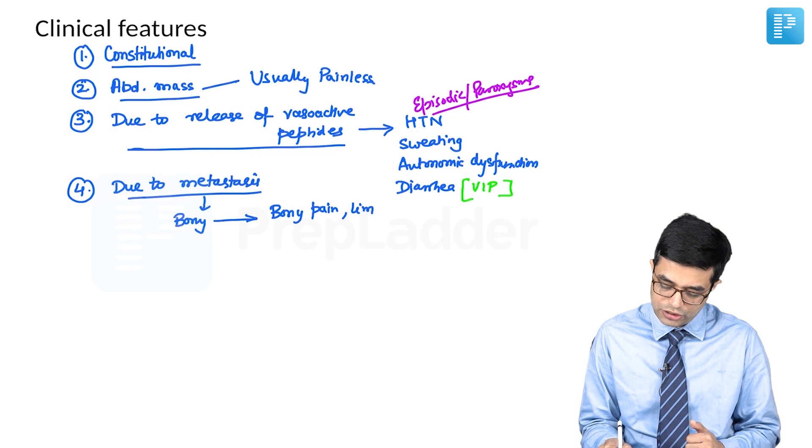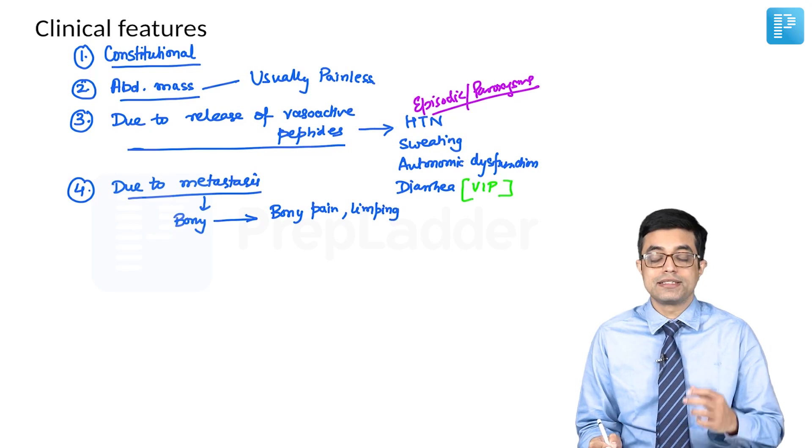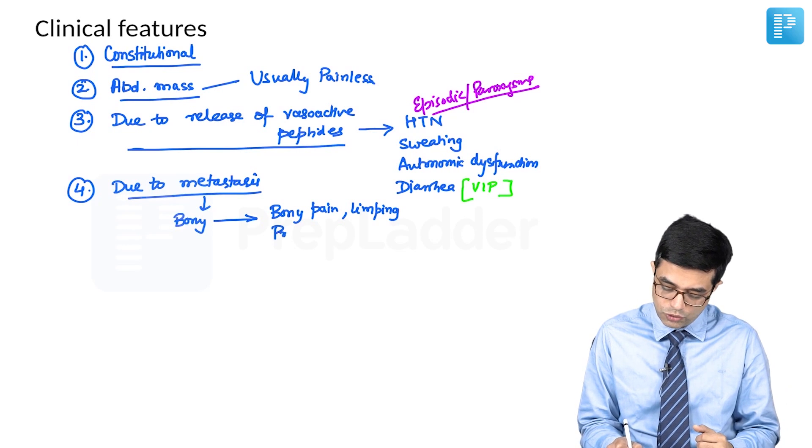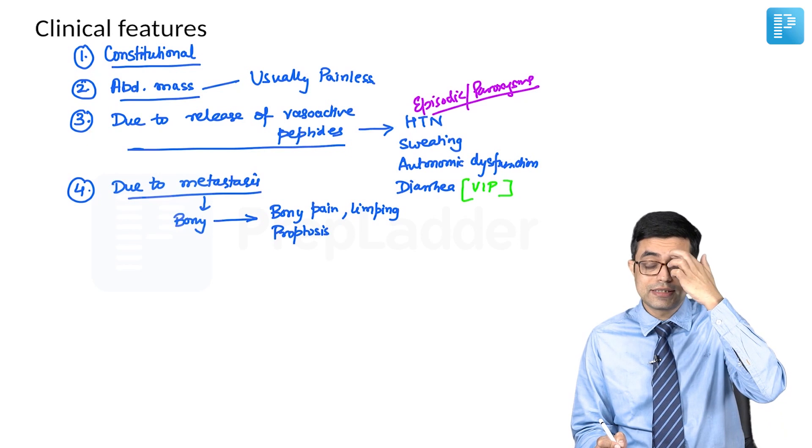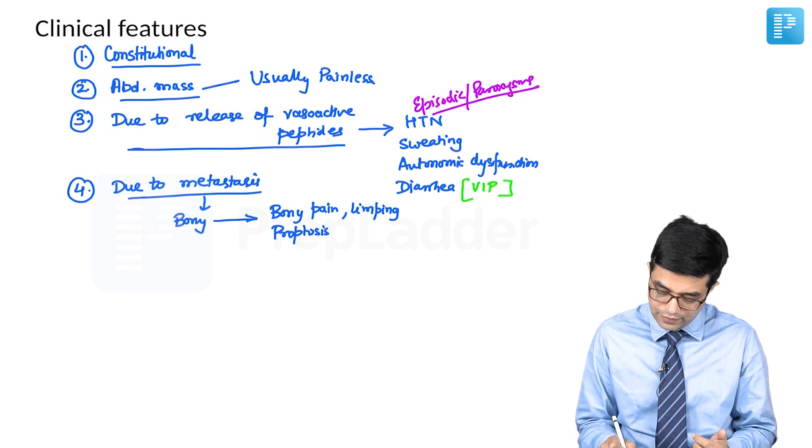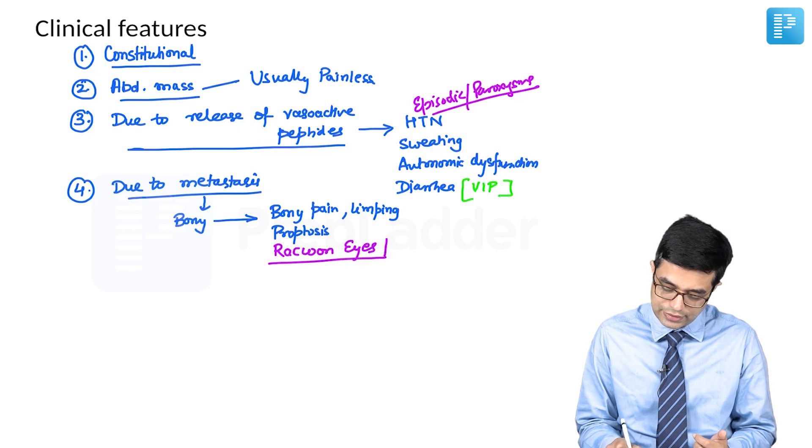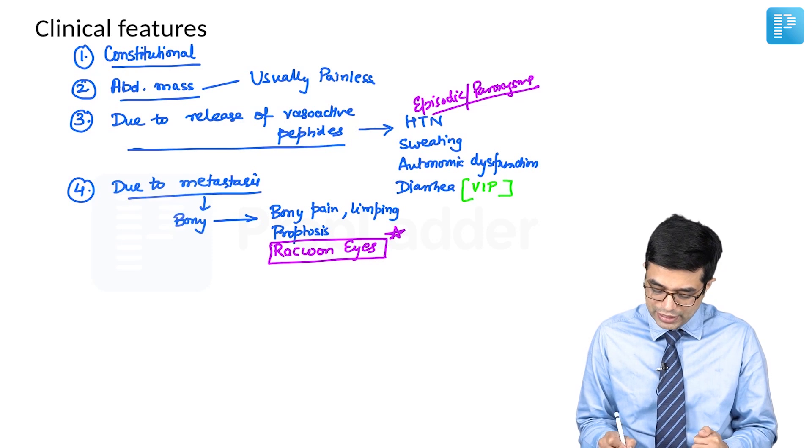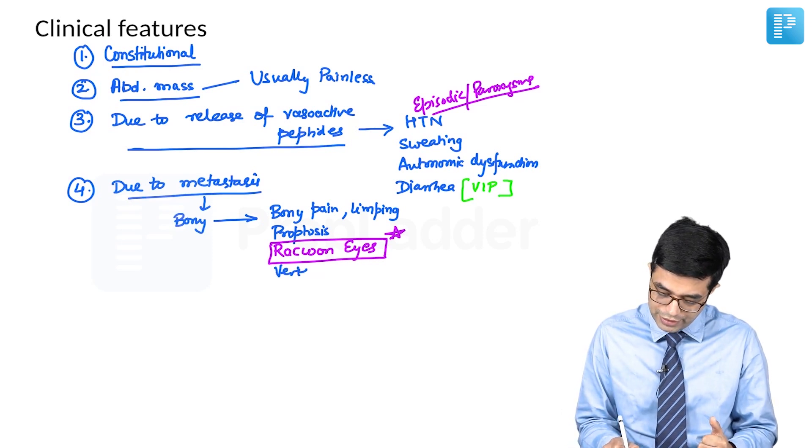There will be limping in the child. If bony metastasis occurs to the orbit of the skull, it can cause proptosis. Bony metastasis around these can produce a localized hemorrhage producing raccoon eyes, also known as panda eyes. Bony abnormalities to the vertebral column can cause vertebral collapse.